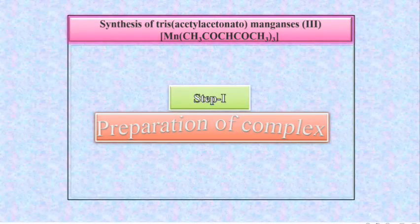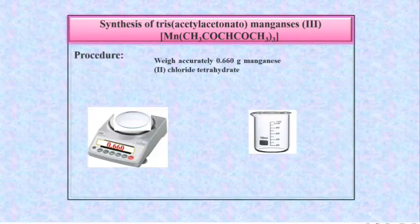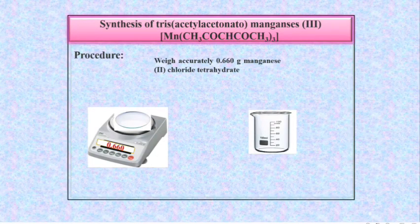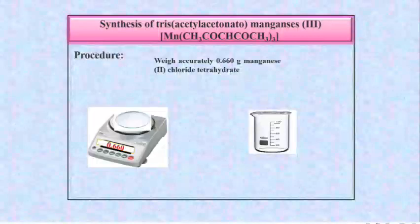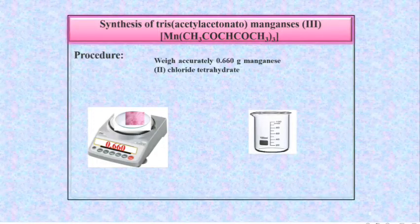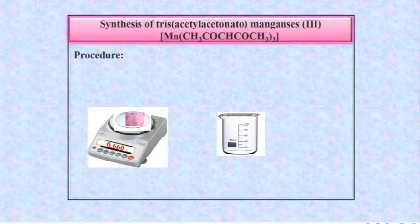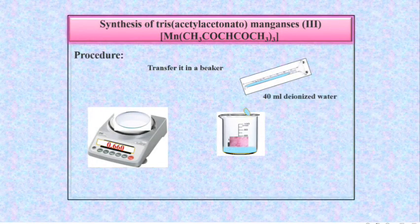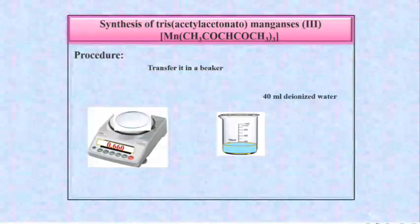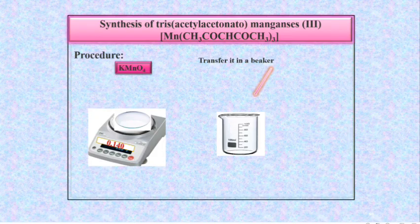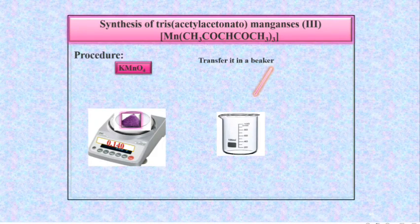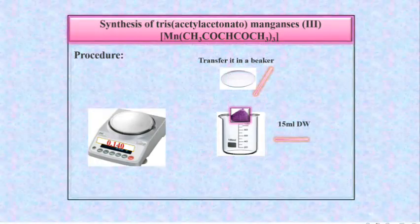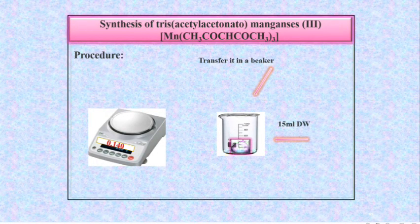Step 1 is the preparation of the complex. Weigh accurately 0.660 g of Manganese Chloride Tetrahydrate. Then transfer it to a beaker and dissolve it in about 40 ml of deionized water. After this, weigh 0.140 g of KMnO4 on a watch glass, then transfer it to a beaker and dissolve it in 50 ml of distilled water.